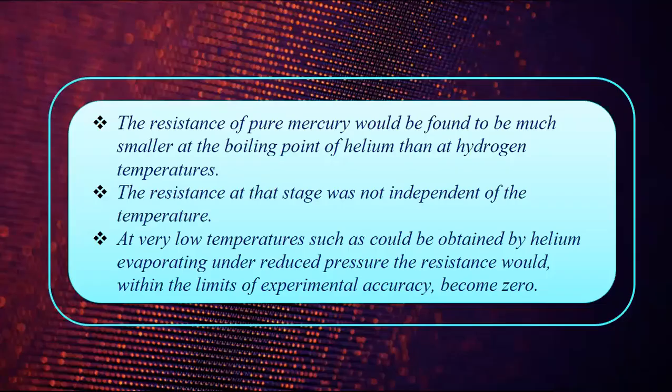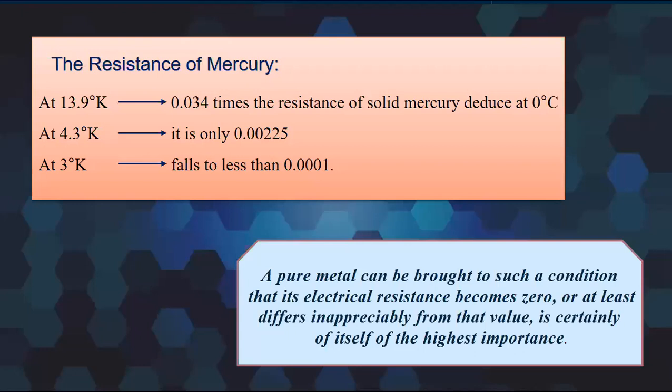He concluded that the resistance of pure mercury would be much smaller at the boiling point of helium than at hydrogen temperature. The resistance was not independent of temperature. At very low temperatures that could be obtained by helium operating under reduced pressure, the resistance would become zero.